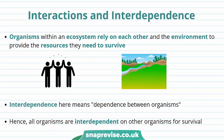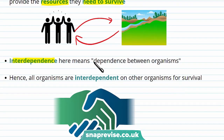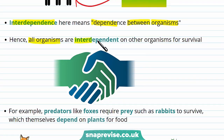There are many different interactions within an ecosystem. Organisms rely on each other and the environment to provide the resources they need to survive — organisms can't just survive on their own. This is called interdependence, meaning there is dependence between organisms. As all organisms rely on each other, all organisms are interdependent on other organisms for survival.